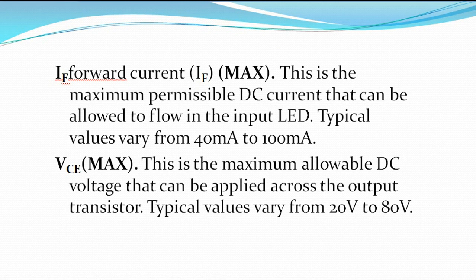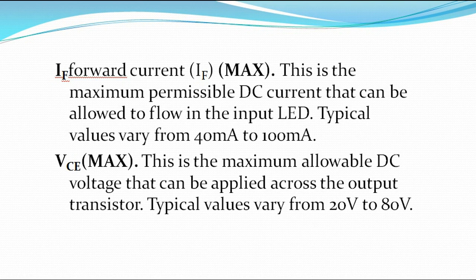Another parameter is forward current. This is the maximum permissible DC current that can be allowed to flow in the input LED — that is where the source comes from before getting to the light sensors. Typically, the value ranges from 40 milliamps to 100 milliamps. I treated the difference between voltage and current in my videos. If you have not seen it, you can go to my channel, Benchars Electronics.